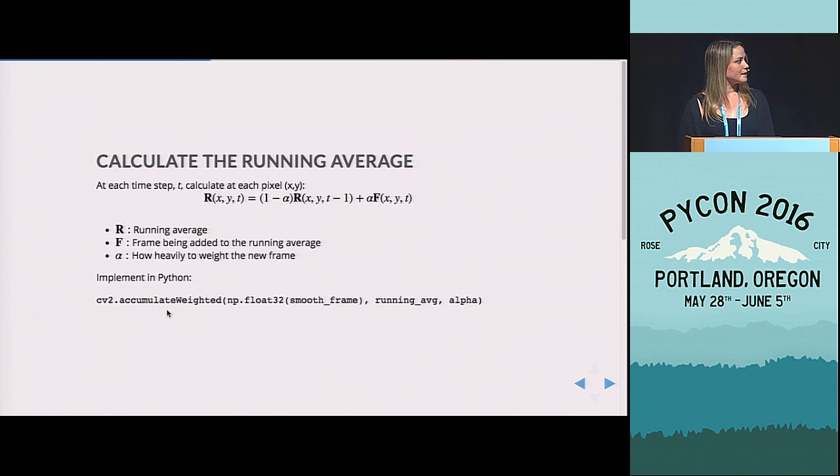And so what this does is it almost smooths it over in time so that you can update, say, if your light changes or the background changes for some reason, you can update that over time. But no small frequency changes are going to hurt your background model too bad. So to do that in Python, we use the accumulate weighted function.